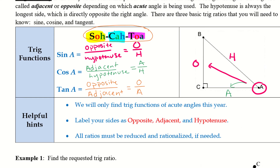Some helpful hints: we will find trig functions of acute angles this year. Label your sides as opposite, adjacent, and hypotenuse. All ratios must be reduced and rationalized if needed — we need to simplify those fractions. We don't want to leave something like 10 over 5; we want to reduce as much as possible. Always label all of your sides so you know what you're working with.